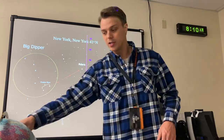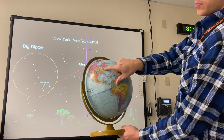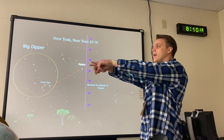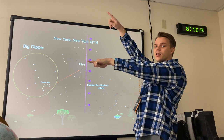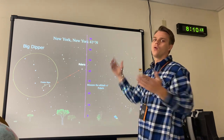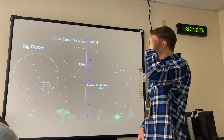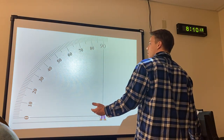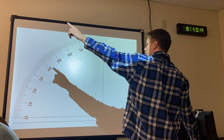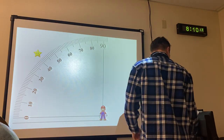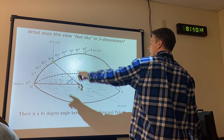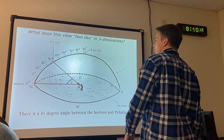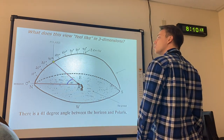Interestingly, New York's latitude is 41 degrees north, and the angle to Polaris from the horizon — called its altitude — is also 41 degrees. It's not a latitude direction, it's an angle in the sky. So in White Plains or New York City, you'll see Polaris at 41 degrees above the horizon, and your latitude is 41 degrees north.